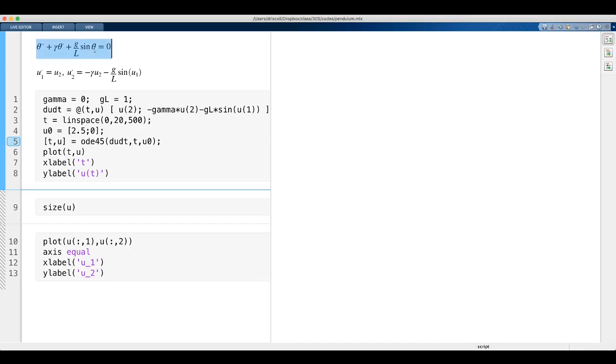So here again is the pendulum equation as a second-order equation. And then here's the conversion into a first-order system in two dimensions. So to keep things simple, I'm going to have this gamma constant as 0, and I'll set g over l equal to 1. And then I'm going to solve an ODE, so I need to define the function that gives me du dt. du dt is going to be defined now as a function of t and u.